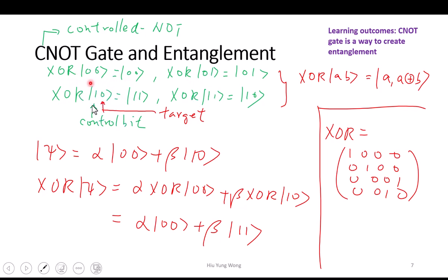We have two qubits, so the basis states are 00, 01, 10, and 11 — just the tensor product. The first qubit we call the control bit, and the second qubit we call the target bit. Whenever the control bit is one, this gate negates the second qubit. When it is zero, it does nothing; when it is one, we negate it.